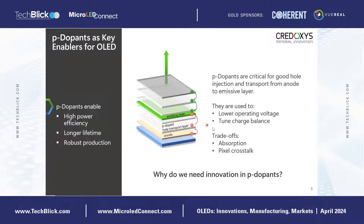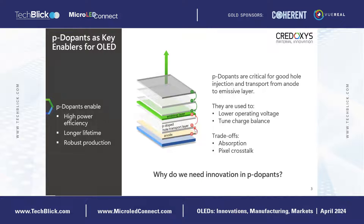But there are also some trade-offs. P-Dopants absorb visible light, so if you use a higher amount of P-Dopants, you will see trade-offs with efficiency. They increase not only the vertical conductivity but also the lateral conductivity, and this leads to pixel crosstalk, as I will explain in a moment. This is also part of the answer to why we need innovation in P-Dopants.